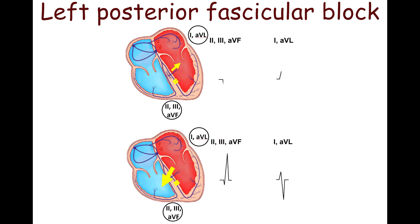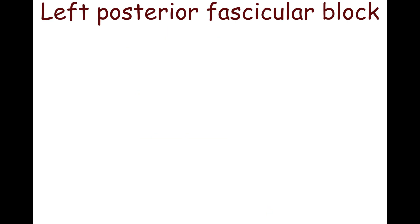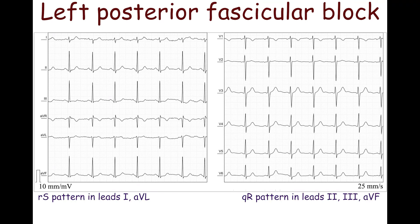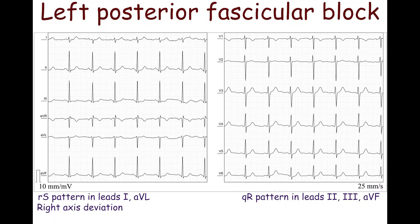Then the impulse moves downward and to the right, producing tall R waves in the inferior leads and deep S waves in the lateral leads. The left posterior fascicular block is diagnosed only in the absence of other causes of right axis deviation, such as right ventricular hypertrophy, lateral ST segment elevation myocardial infarction, or pulmonary embolus. This ECG shows an RS pattern in leads I and AVL, and a QR pattern in leads II, III, and AVF, with right axis deviation. R-wave peak time in lead AVF is 50 ms.